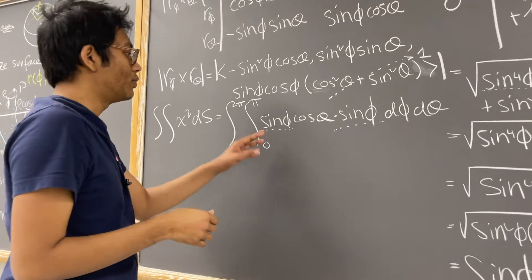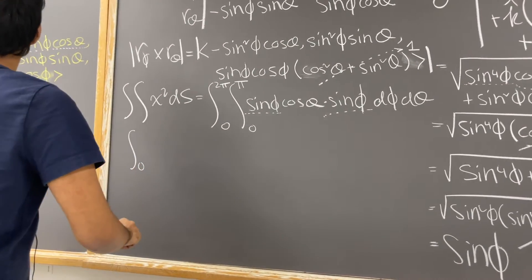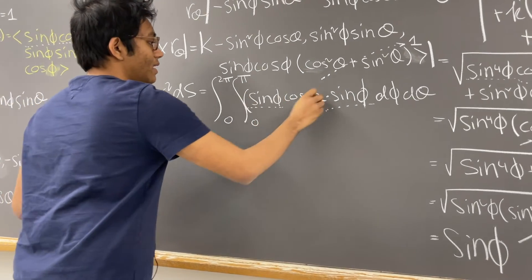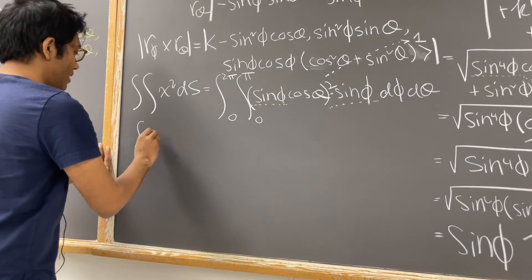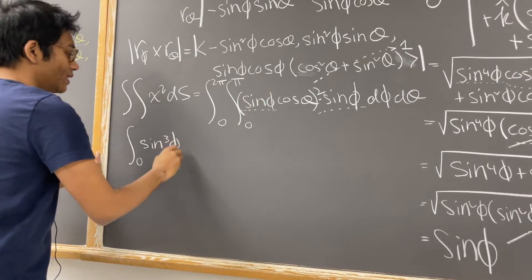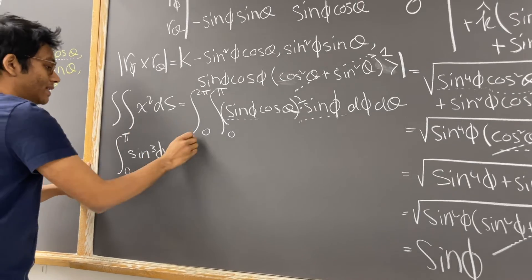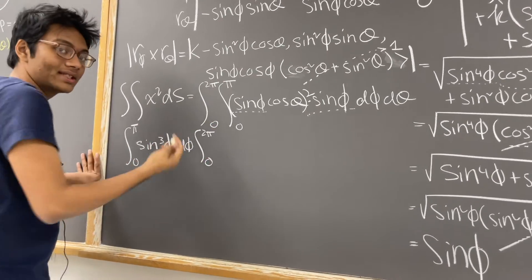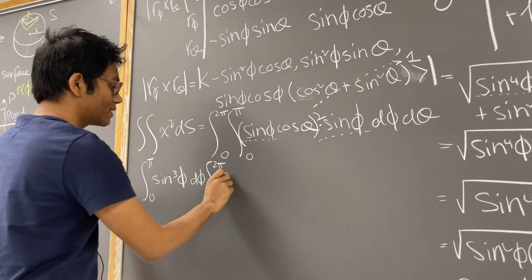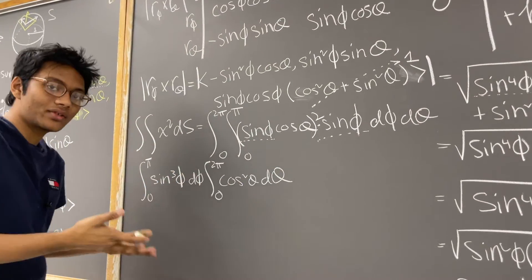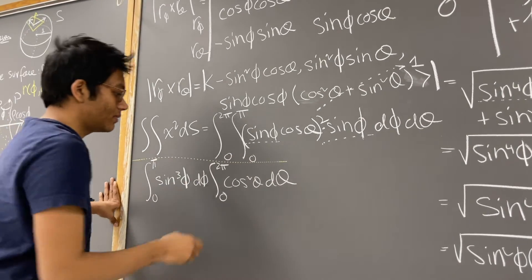Since we have x squared, I need to square the x component, so that term should be squared. This gives us sine squared phi cosine squared theta times sine phi d phi d theta. We can separate these integrals because they are variable separable: the integral from 0 to pi of sine cubed phi d phi, and the integral from 0 to 2 pi of cosine squared theta d theta.